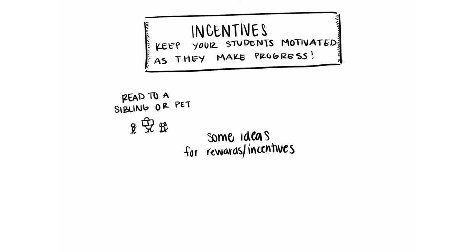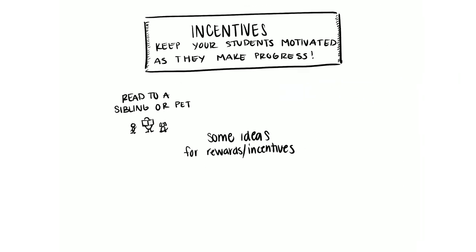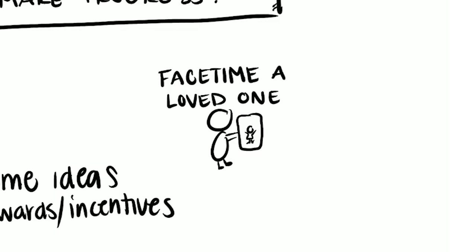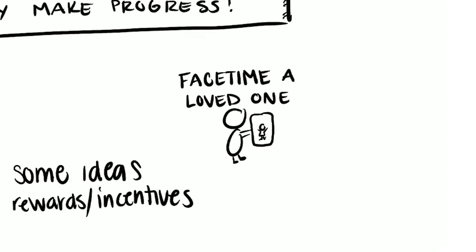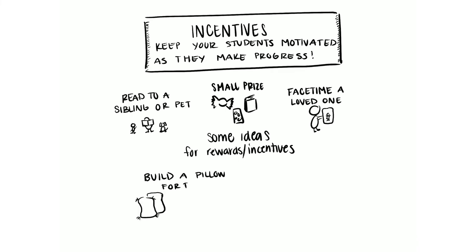Here are a few ideas: the first is reading to a sibling or a pet — your student may be practicing a skill like reading, math, memorization, or drawing, and sharing it with siblings or pets. You could also do a FaceTime with a loved one at the end of the week where your student shows their favorite work to a grandparent or friend. You might also incorporate small prizes like books, stickers, or small candies. Bigger rewards like building a pillow fort or decorating a window with whiteboard marker can help your child break out of routine and have exciting moments throughout the day.